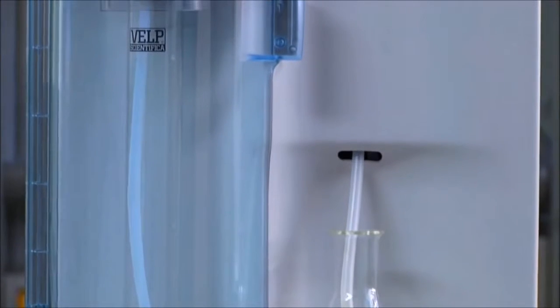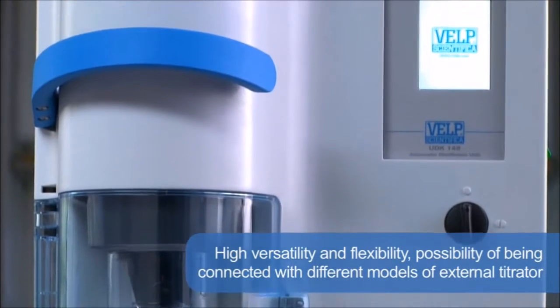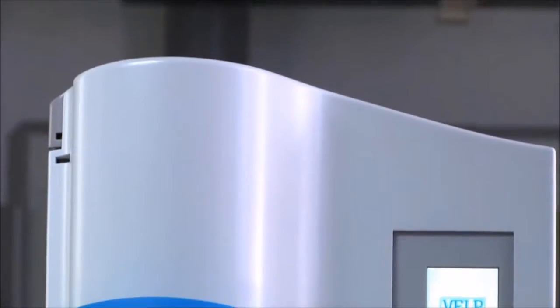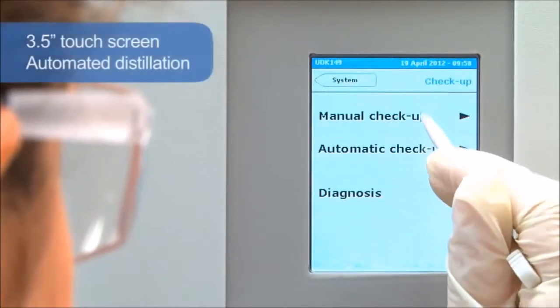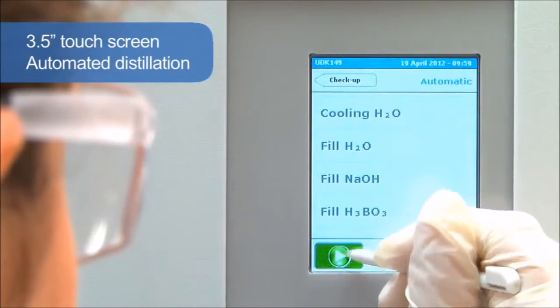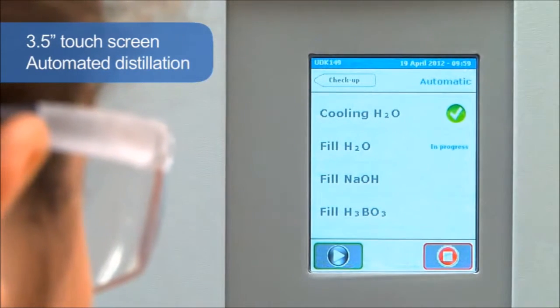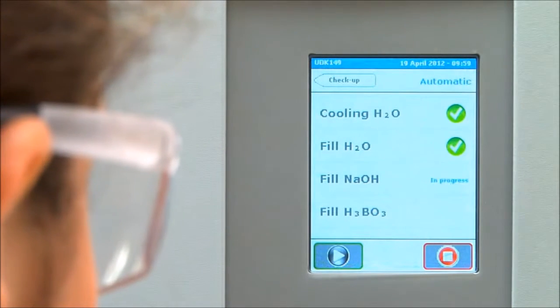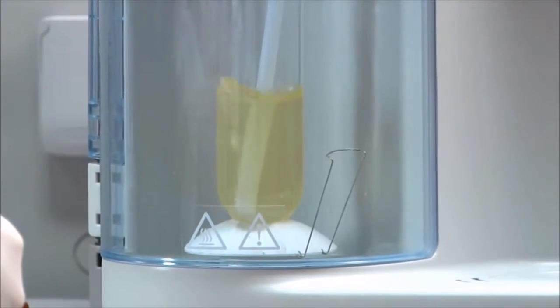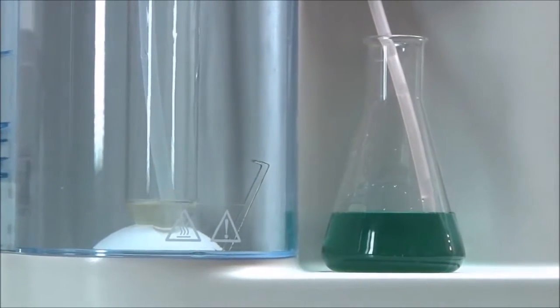The VELP UDK 149 offers the highest versatility and flexibility, thanks also to the possibility of being connected with different models of external titrator. With a 3.5-inch touchscreen color display, the UDK 149 achieves automatic distillation through alkali, dilution water and receiver solution addition with pre-programmed distillation protocols and reaction times. It provides regulated steam output and conveniently automatic draining of sample residues.